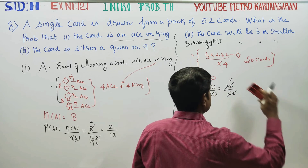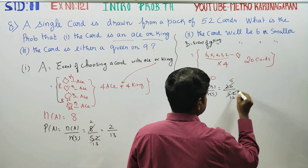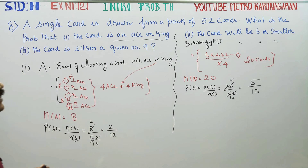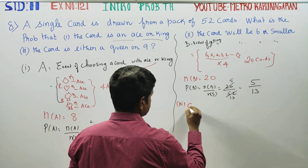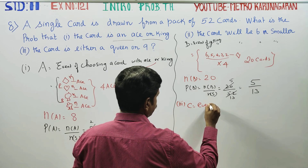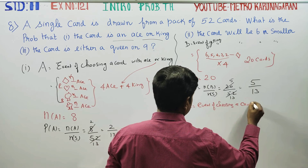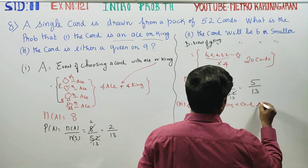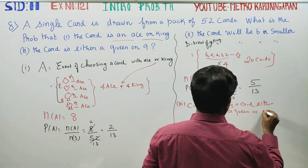After finishing this, the third sum: a card is either a queen or 9. C is equal to the event of choosing a card that is either a queen or 9.